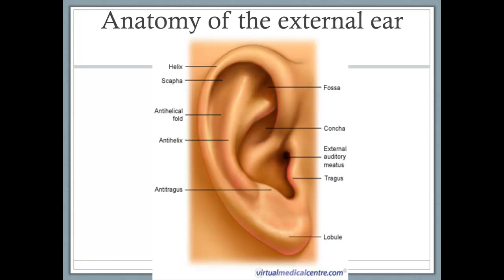First we're going to go over a little bit of review of the anatomy of the external ear. You have your helix, your anti-helix with the anti-helical fold in between, your tragus, your anti-tragus, the lobule, the concha, and the fossa, which some people call the triangular fossa. The external ear, or pinna, includes the auricle as well as the external auditory canal.